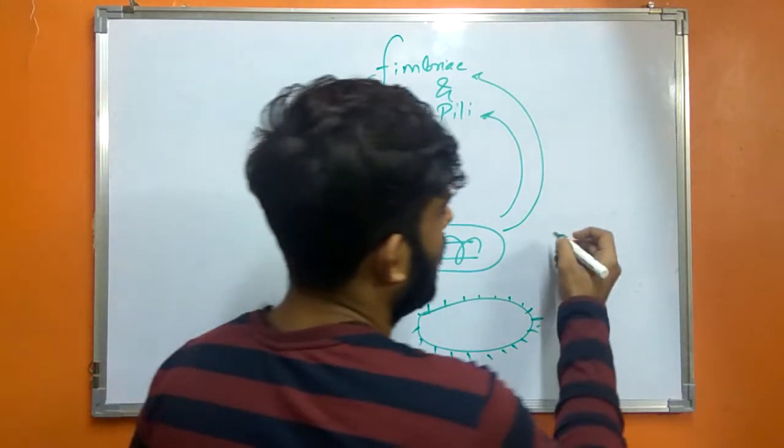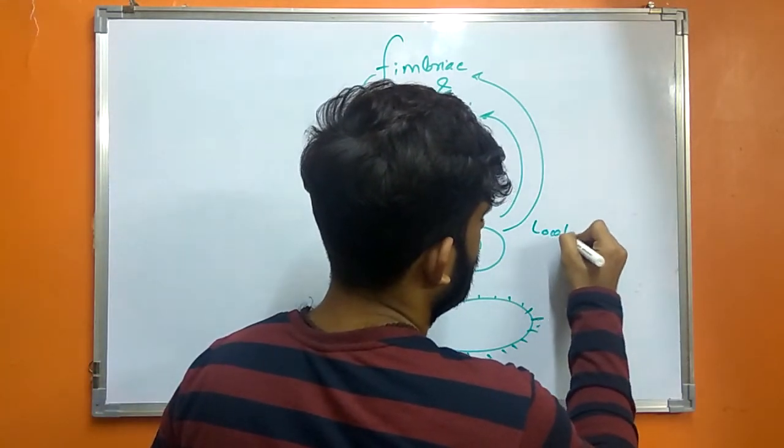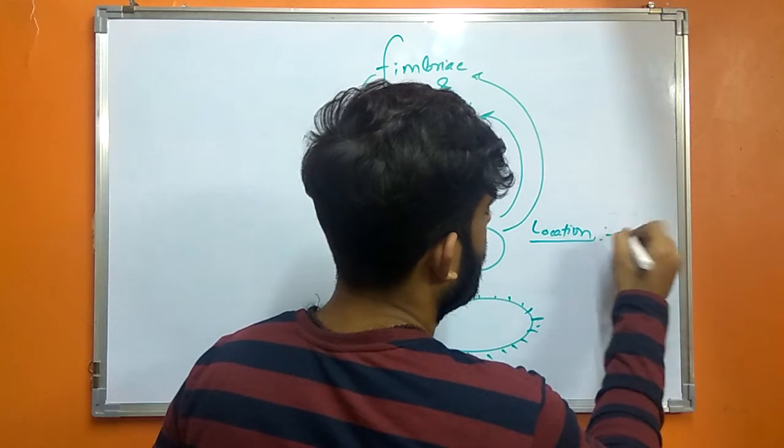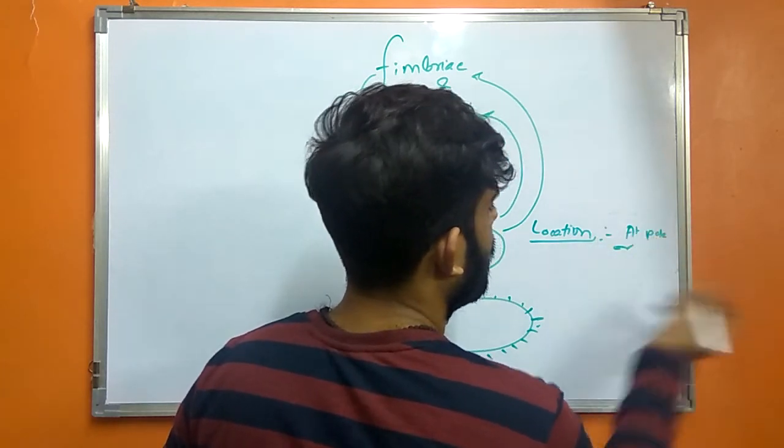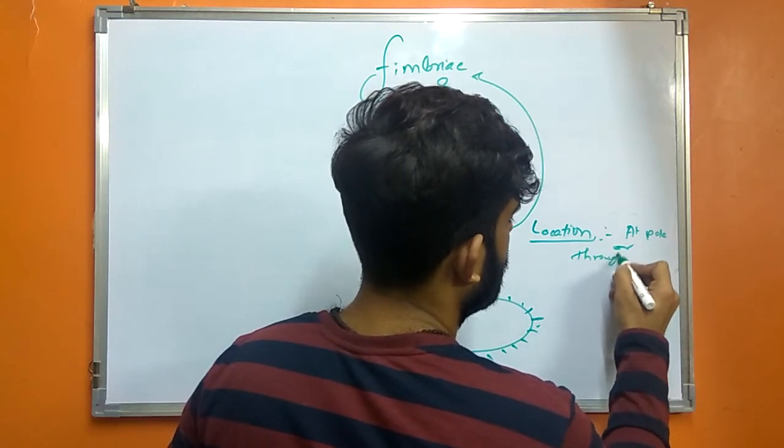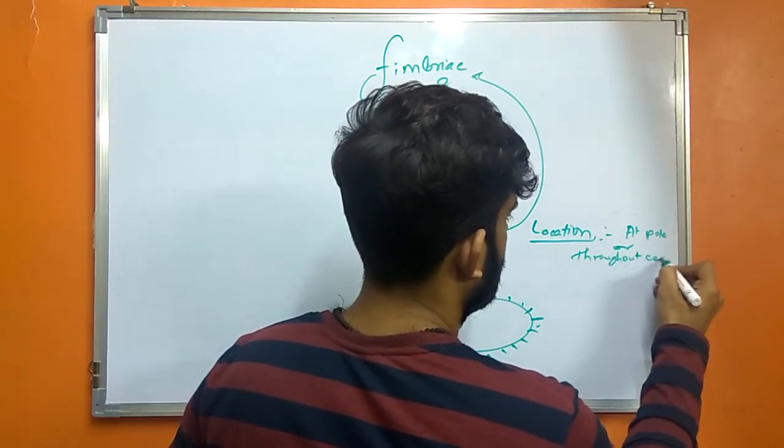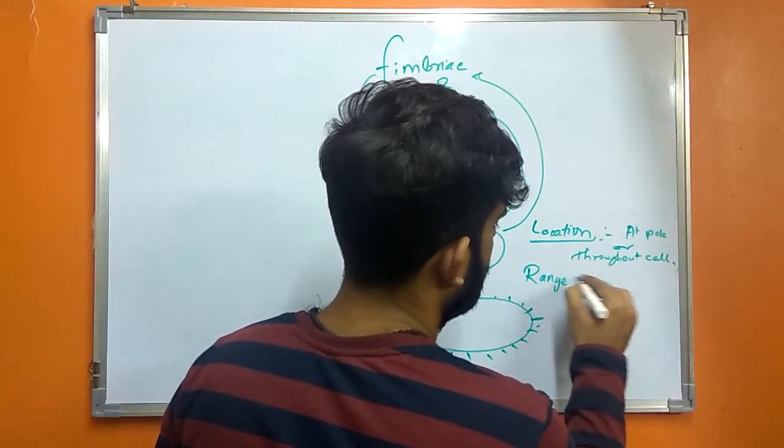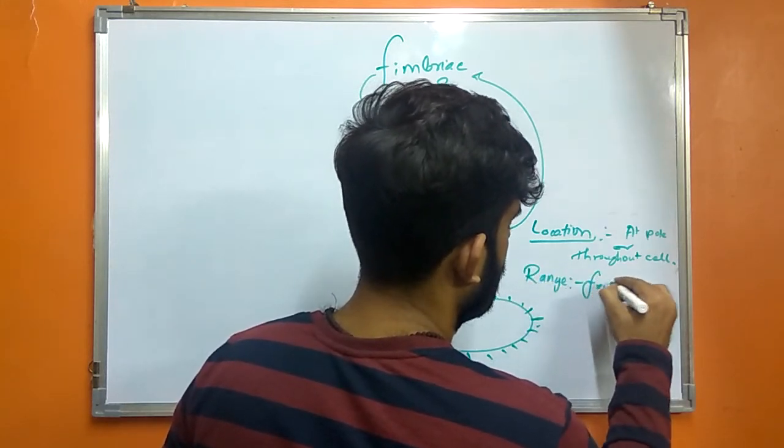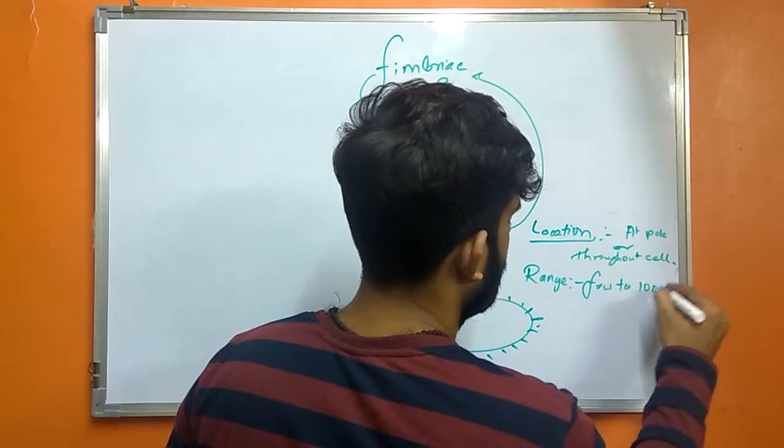So if I talk about the characteristics, its location will be at pole or throughout the cell. Second, the range is few to hundred per cell.